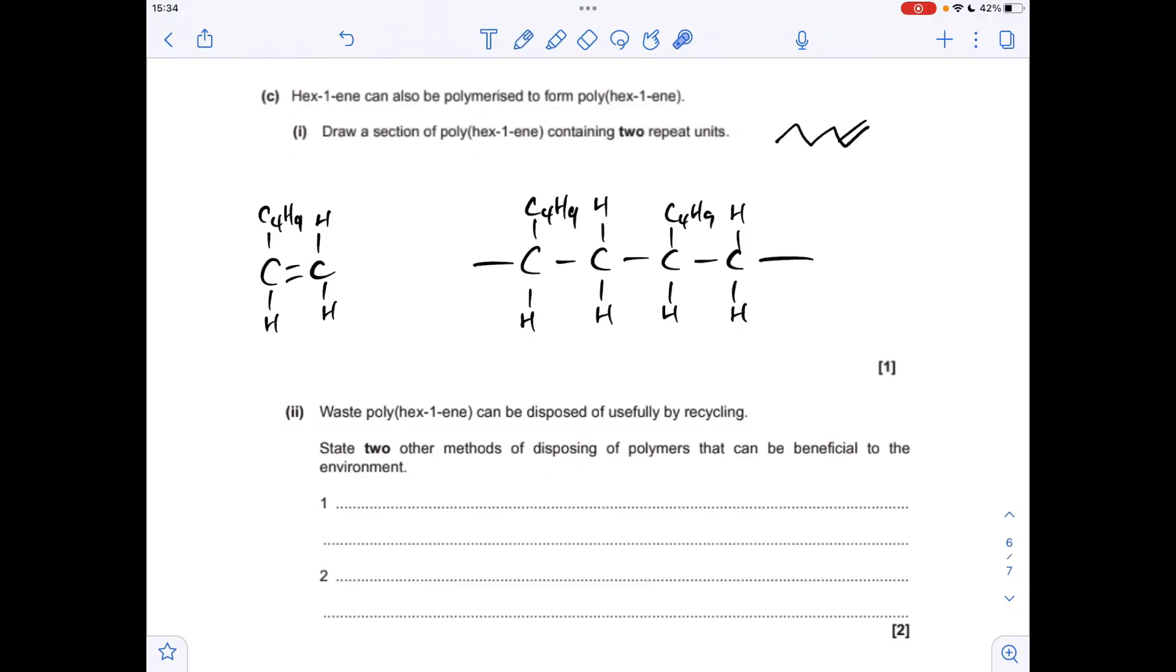Finally, two other methods of disposing of polymers that can be beneficial to the environment. The first thing you can do is burn them, combust them, and the energy released can be used to generate electricity. The other thing you could do is feedstock recycling. They reverse the polymerization process and turn the polymer back into the original monomer, and this can be used as a chemical feedstock in other chemical processes.